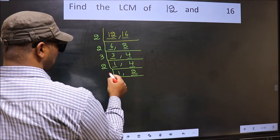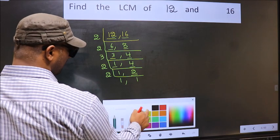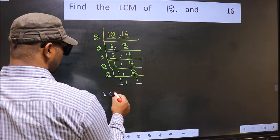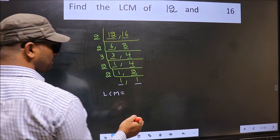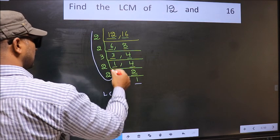Now we have 2. 2 is a prime number so 2, 1 is 2. So we got 1 in both the places. So our LCM is the product of these numbers.